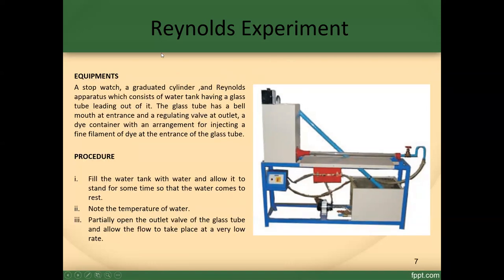Required equipment: a stopwatch, a graduated cylinder, and the Reynolds apparatus — which consists of a water tank with a glass tube leading out of it. The glass tube has a bell mount at the entrance and a regulating valve at the outlet, along with a dye container with an arrangement for injecting a fine filament of dye at the entrance of the glass tube.